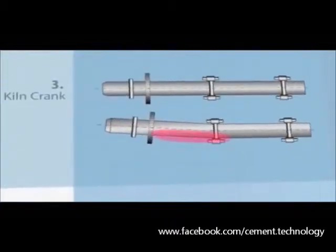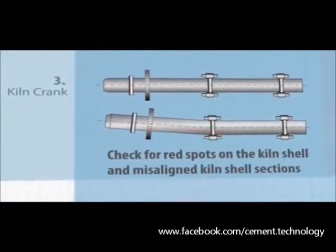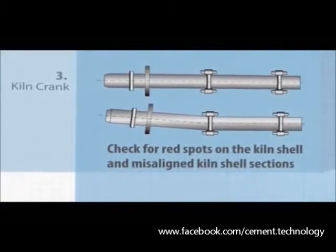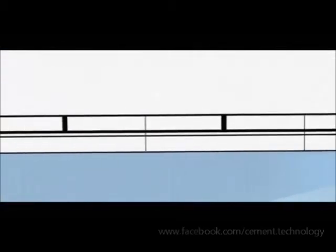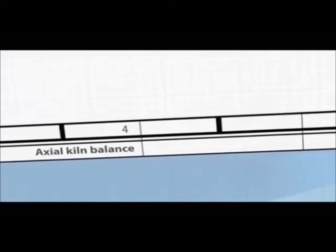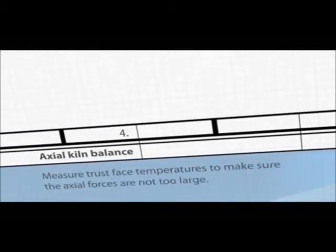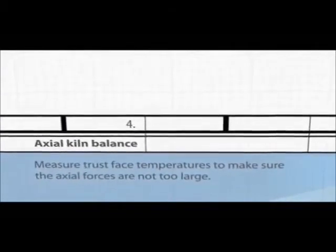3. Kiln crank. Check for red spots on the kiln shell and misaligned kiln shell sections. 4. Axial kiln balance. Measure truss face temperatures to make sure the axial forces are not too large.